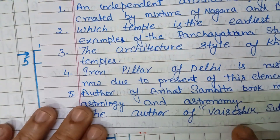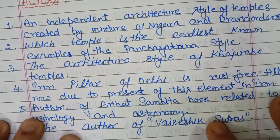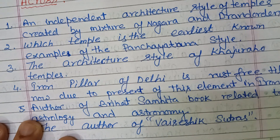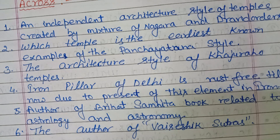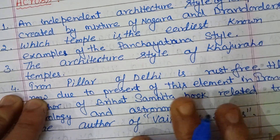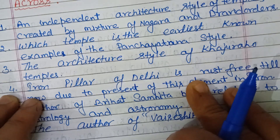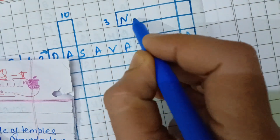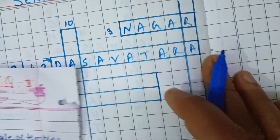Third question: what is the architecture style of Khajuraho temple? The architecture style of the most famous Khajuraho temples is Nagar style — N-A-G-A-R. This is placed in third horizontal.